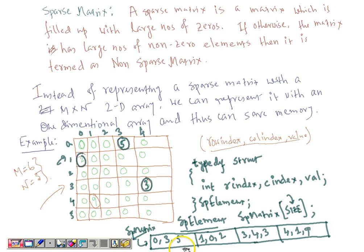We can deal with the matrix represented in this way, but there is a constraint. We should only represent the sparse matrix linearly when it is actually going to save us memory. Otherwise, we should not follow this approach. Let's look at the calculation for that.